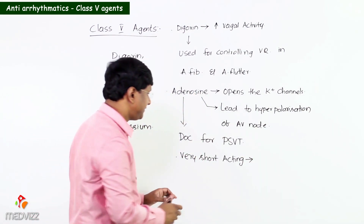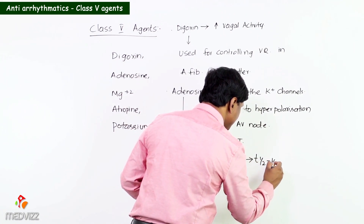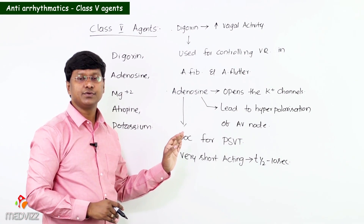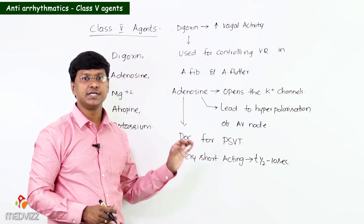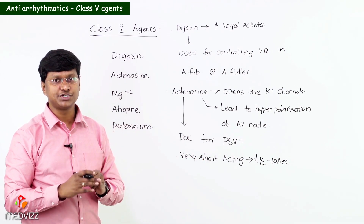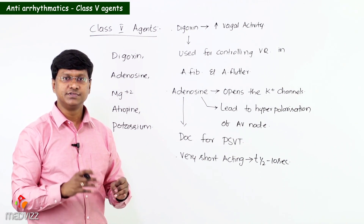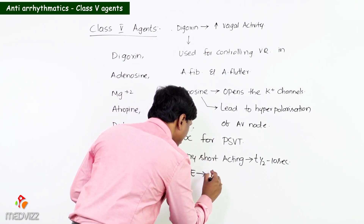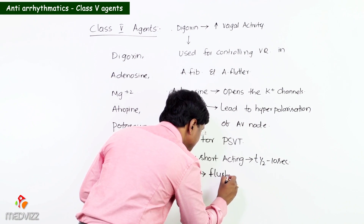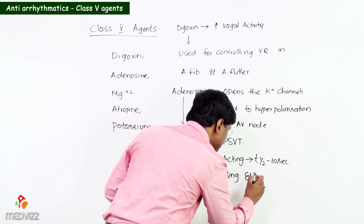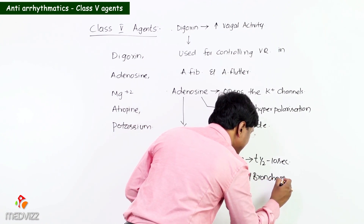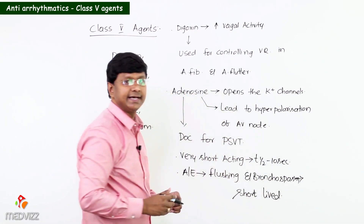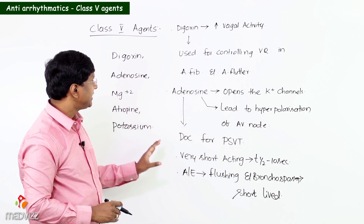Adenosine is a very short-acting agent. The half-life is around 10 seconds. Because of this short half-life, adverse effects like flushing of the face and bronchospasm are also short-lived.